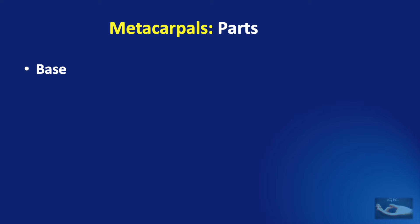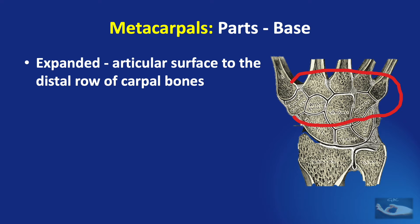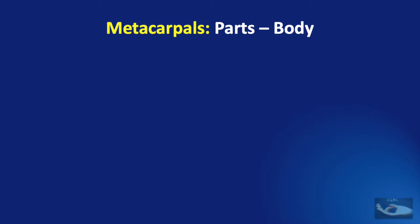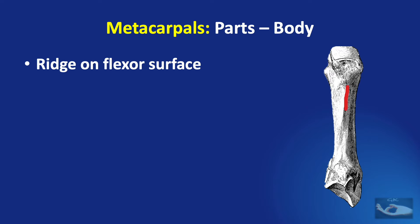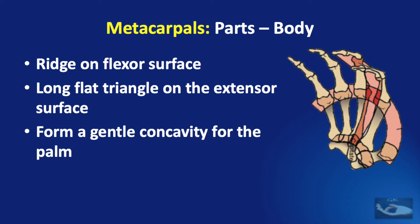The metacarpals consist of four parts: the base, the body or shaft, the neck, and the head. The bases are expanded proximally and contain the articular surface that articulates with the distal row of carpal bones. The third metacarpal base has a styloid process projecting dorsally between the capitate and trapezoid. The shaft has a characteristic ridge on the flexor surface and a long flat triangle on the extensor surface with a proximal ridge. The shafts of all metacarpals contribute to the gentle concavity of the palm.